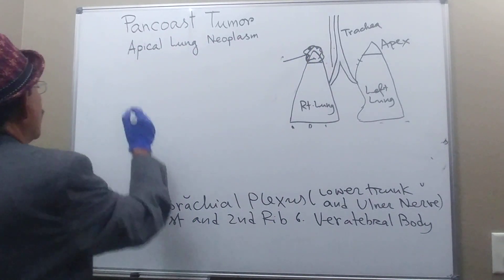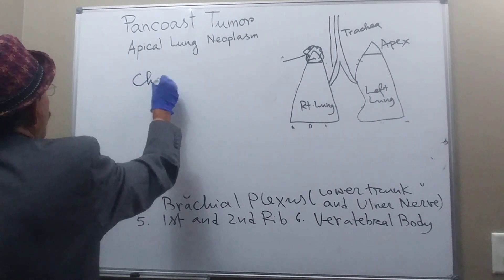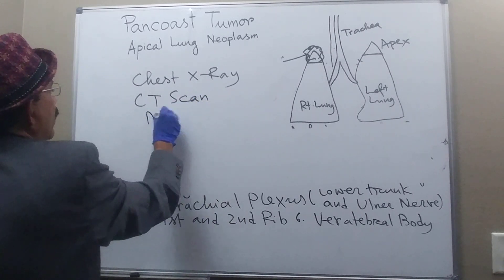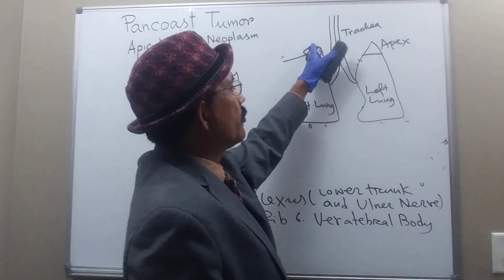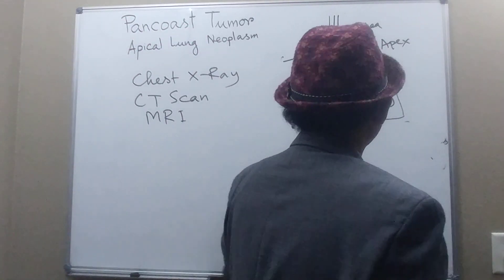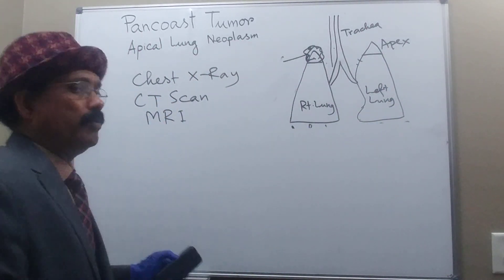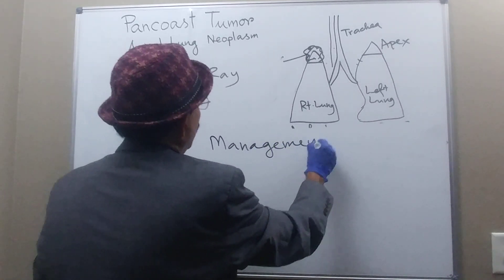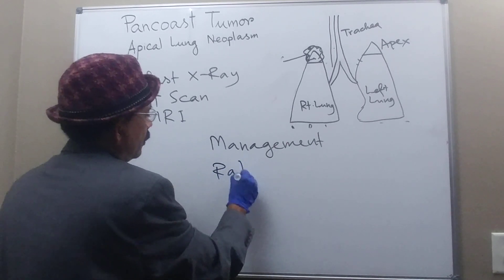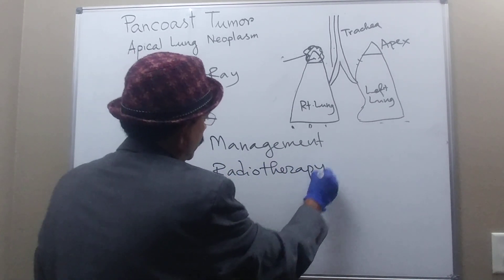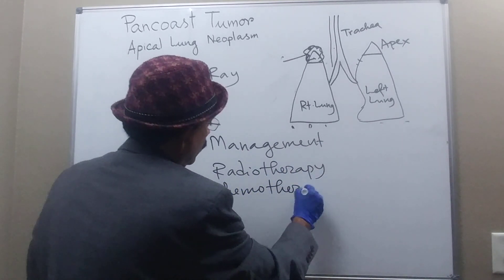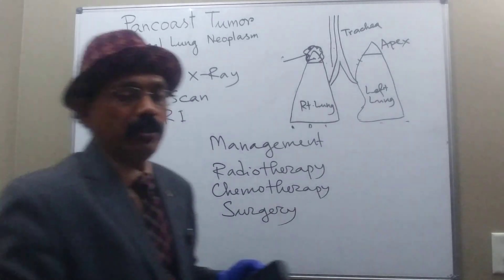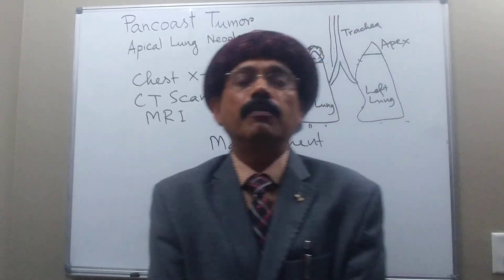Diagnosis is made by chest X-ray and CT scan or MRI, which will easily identify the tumor at the apex of the lung. Management should be done by a registered physician and includes multiple modalities: radiotherapy, chemotherapy, and surgery. That covers the key features of Pancoast tumor.